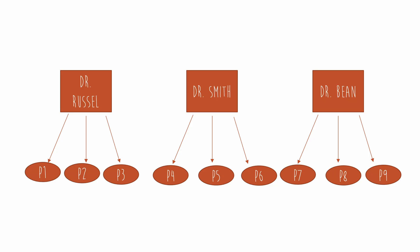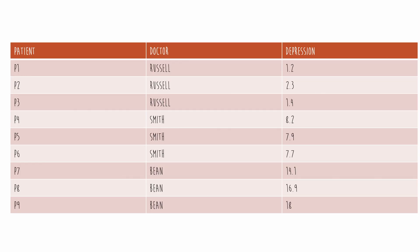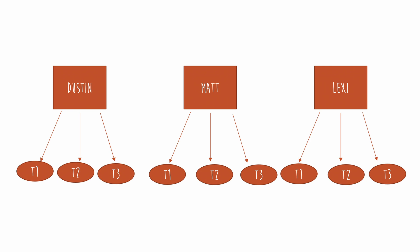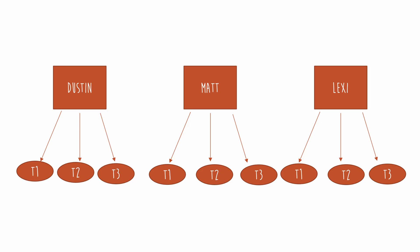So here we have Dr. Russell's clients — patient one, patient two, and patient three; Dr. Smith's clients — patient four, five, and six; and so on. And if you were to look at the data in a spreadsheet format, it would look like this — this is what we call long format as opposed to wide format. Mixed models require you to have the data in long format. And here's another clustering visual, this time representing repeated time points: Dustin at time one, time two, and time three; Matt at time one, time two, and three; and Lexi at time one, time two, and time three.